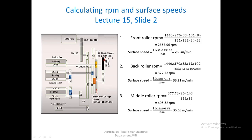The front roller RPM calculation goes like this: assuming motor RPM is 1440, multiply by pulley diameter 270 divided by 165, which is the diameter of this particular pulley, multiplied by 33 divided by 131. Then since 131 also acts as driver and driven, 131 again in the numerator divided by 84, into 84 divided by 33. Since 84 also acts as a carrier, you get the surface speed of approximately 258 meters per minute.